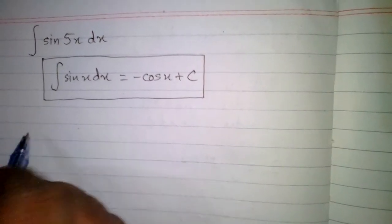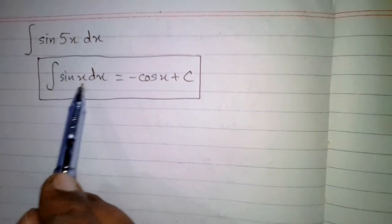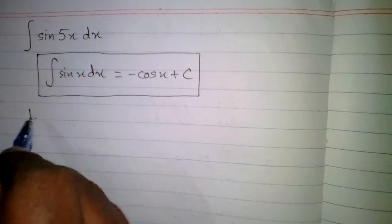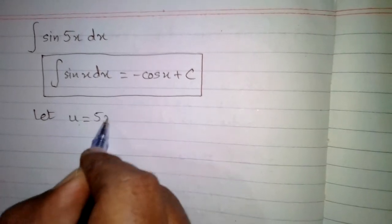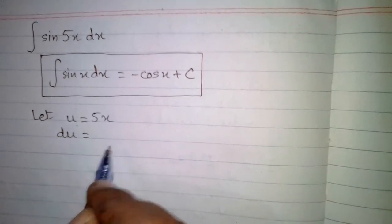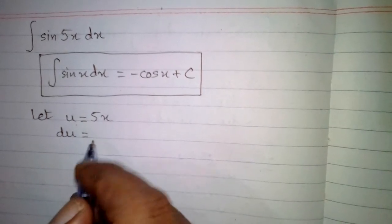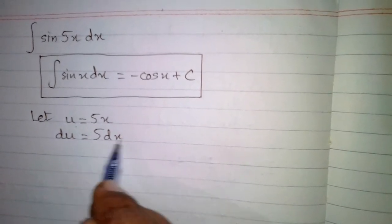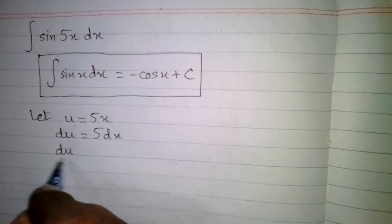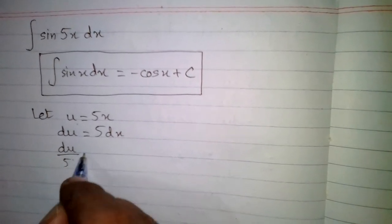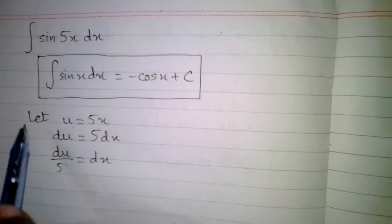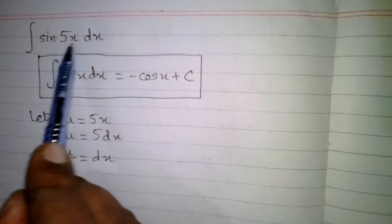We have 5x in place of x, so we suppose 5x as u. We let u equal to 5x, then the differential du is equal to the derivative of 5x multiplied by dx. The derivative of 5x is 5, so du equals 5 dx. We can write this as du upon 5 is equal to dx, simply taking this 5 to the other side.